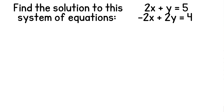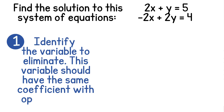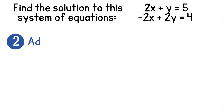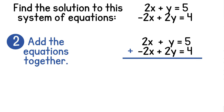Let's look at another example. This system has 2x plus y equals 5 and negative 2x plus 2y equals 4. We always start by identifying the variable that we want to eliminate — the variable should have the same coefficient with opposite signs. We can see that our coefficients of x are positive 2 and negative 2, so this is the variable we'll eliminate. Adding 2x and negative 2x gives us 0x. Then we have 3y, and 5 plus 4 gives us 9.